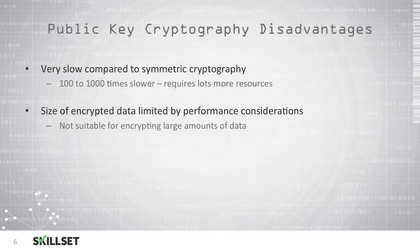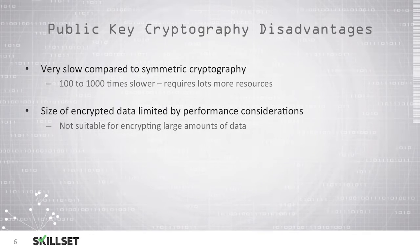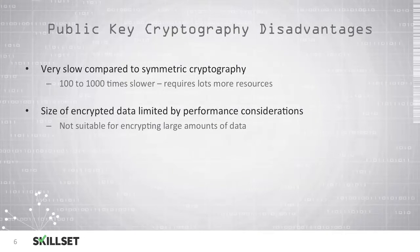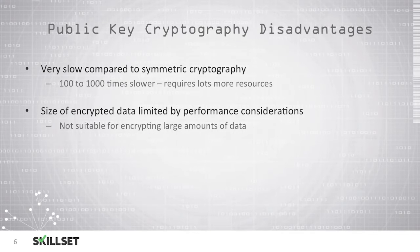There are some disadvantages to public key cryptography. The biggest disadvantage is its speed — it is approximately 100 to 1000 times slower than symmetric cryptography and requires a lot more resources. Asymmetric cryptography is not suitable for encrypting large amounts of data due to performance considerations. For the CISSP exam, remember that symmetric encryption is very fast, asymmetric encryption is much slower, and asymmetric encryption uses two keys while symmetric encryption uses only one key.